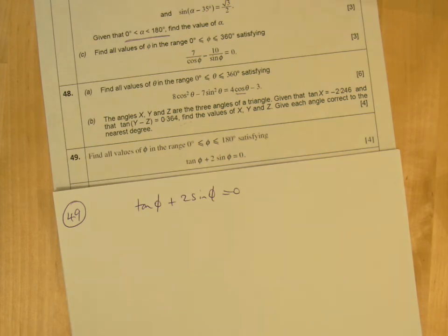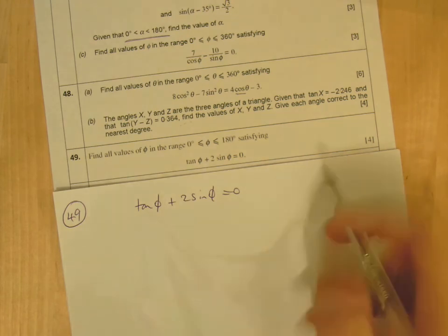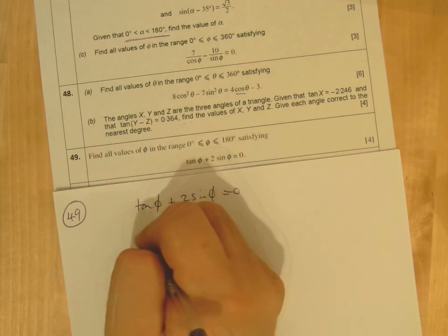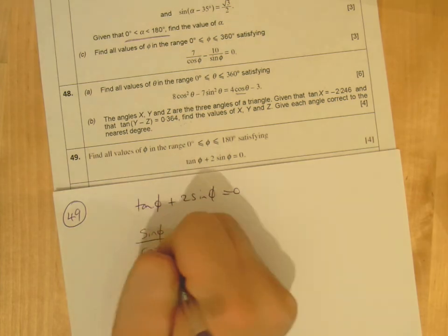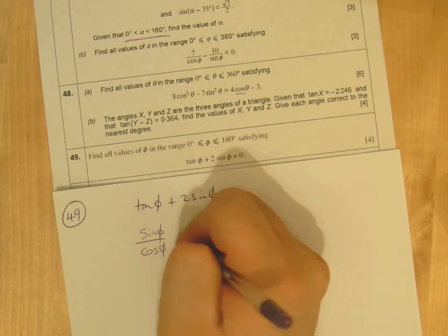There are no squares here, but we know the other relationship about tan. Tan is sin over cos, so I would do that straight away.